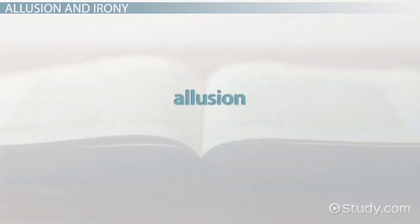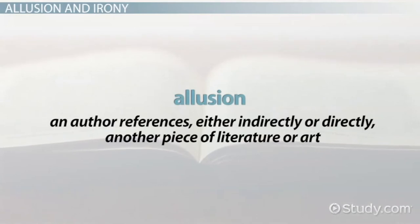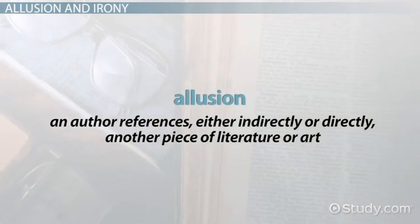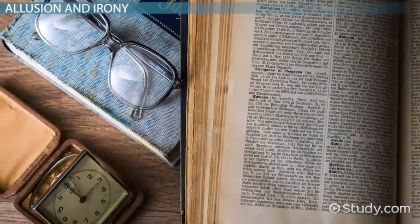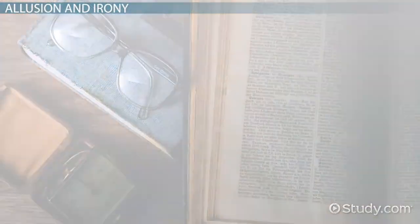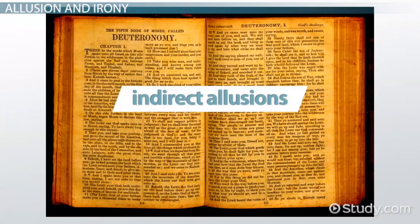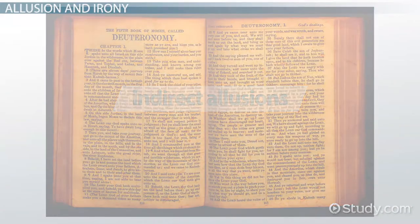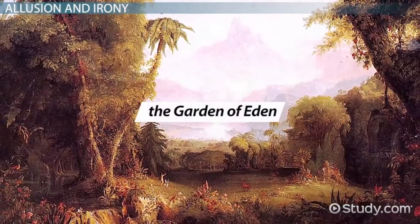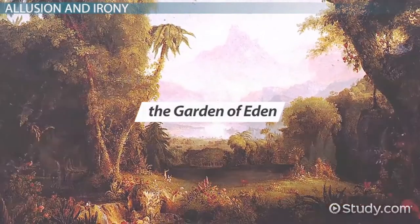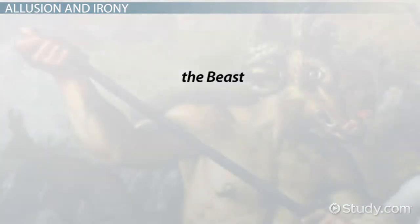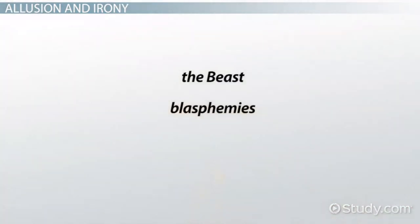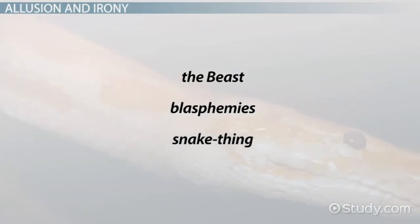Illusion is when an author references, either indirectly or directly, another piece of literature or art. Lord of the Flies has many indirect allusions to the Bible and to biblical symbolism. The island was described similar to the Garden of Eden, with references and descriptions about the beast, speaking of blasphemies by Jack, identifying a snake thing, and many others.